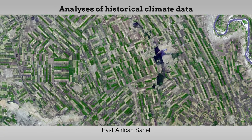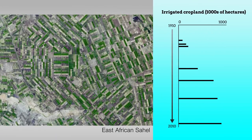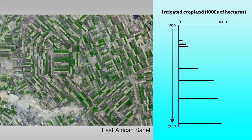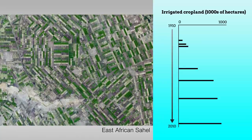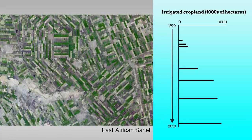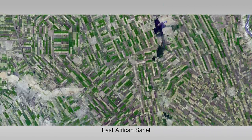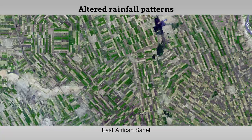Analyses of historical climate data and climate model simulations around a massive irrigation project in the East African Sahel suggest that irrigation has reduced rainfall over the irrigated area but enhanced rainfall in the surrounding region. These findings further suggest that altered rainfall patterns must be considered during the planning of large agricultural projects, particularly in regions with limited water.